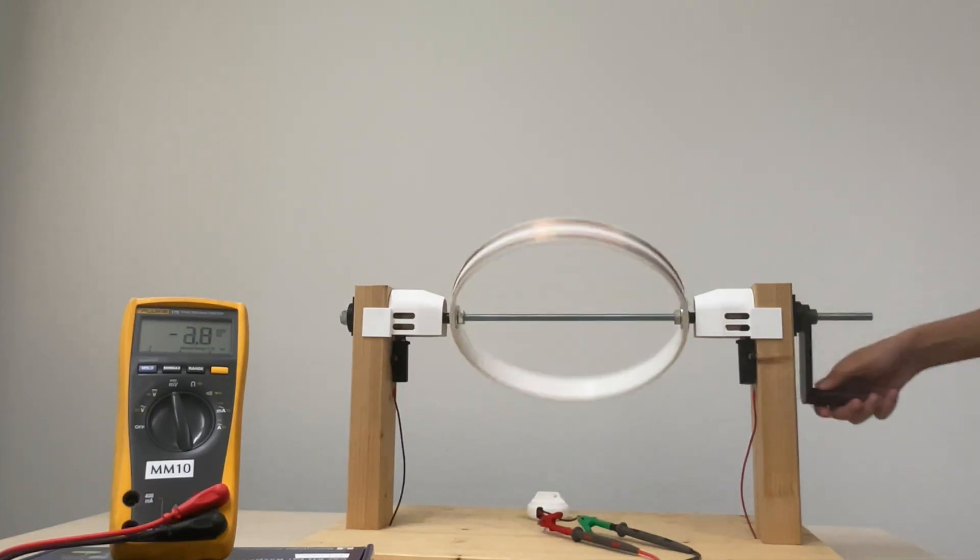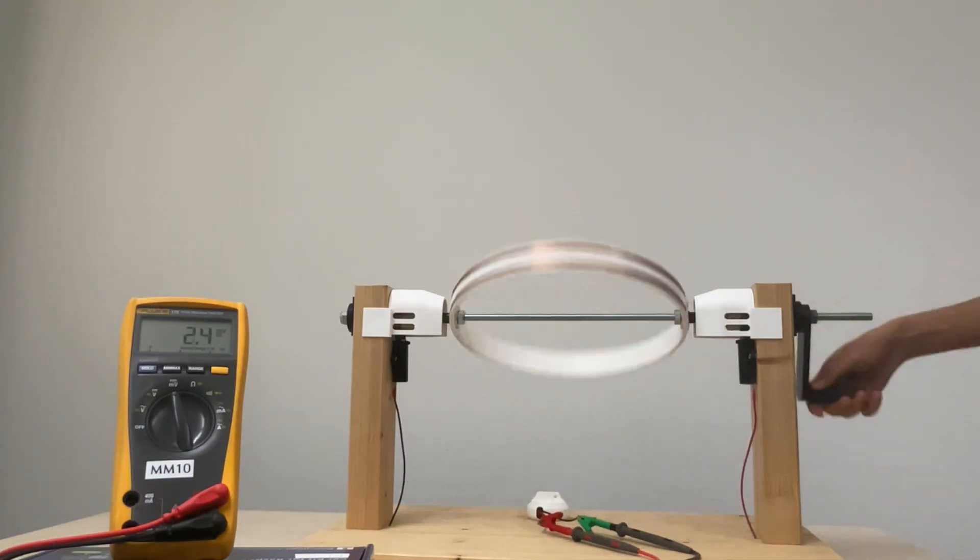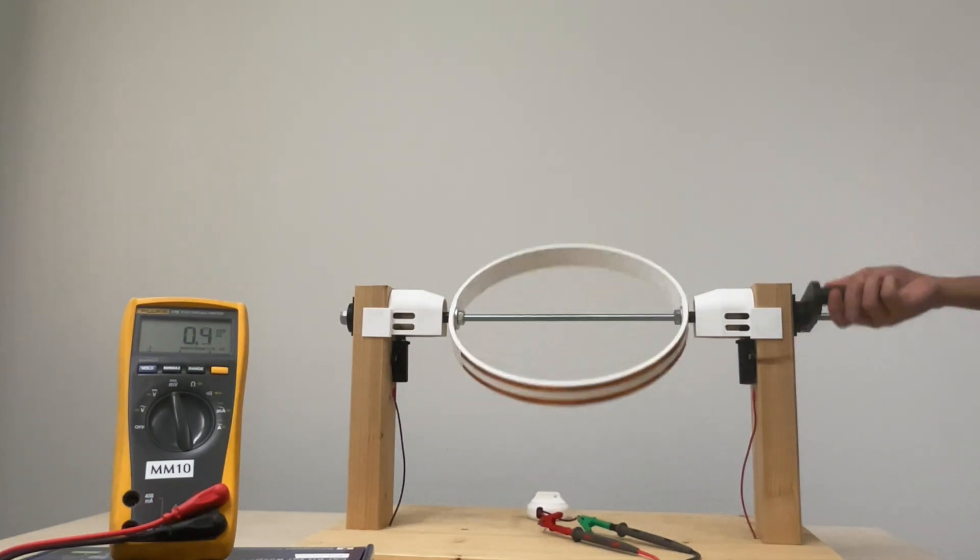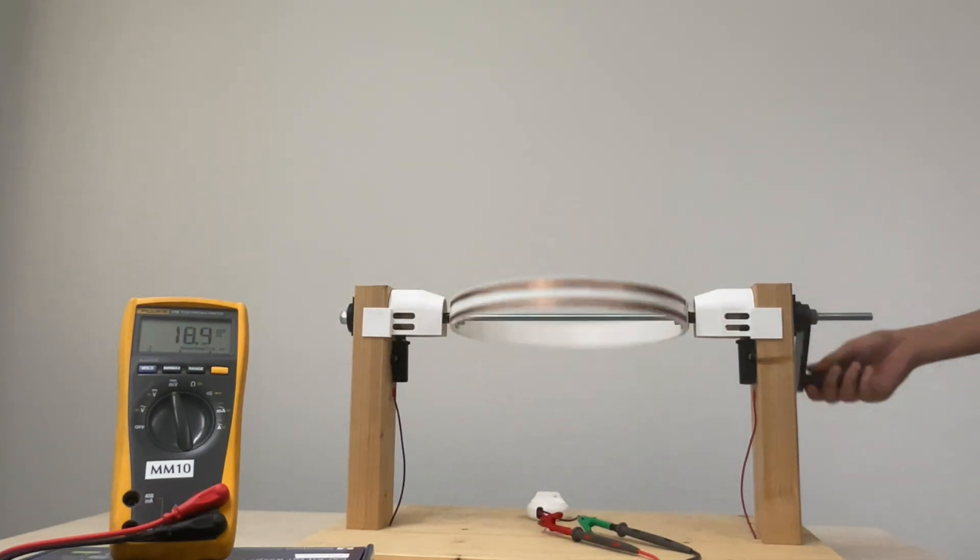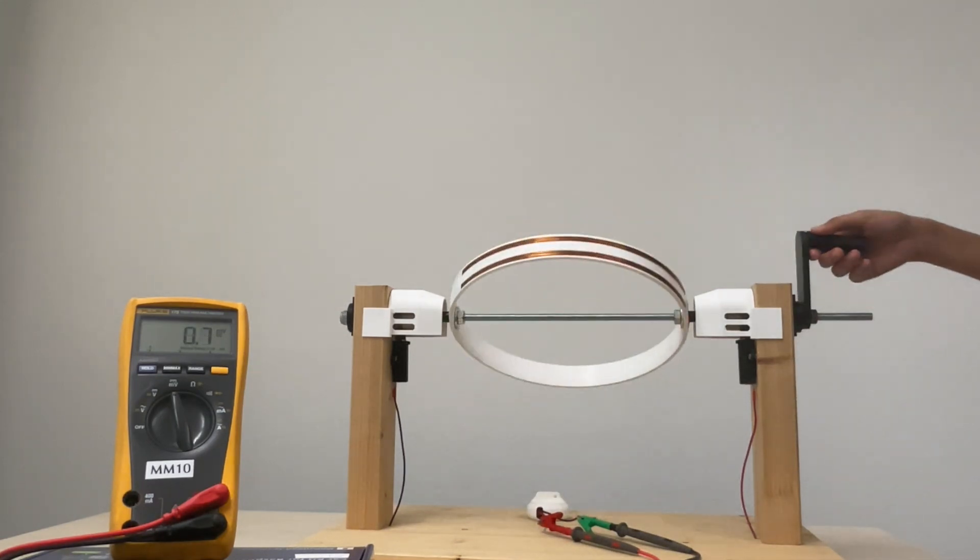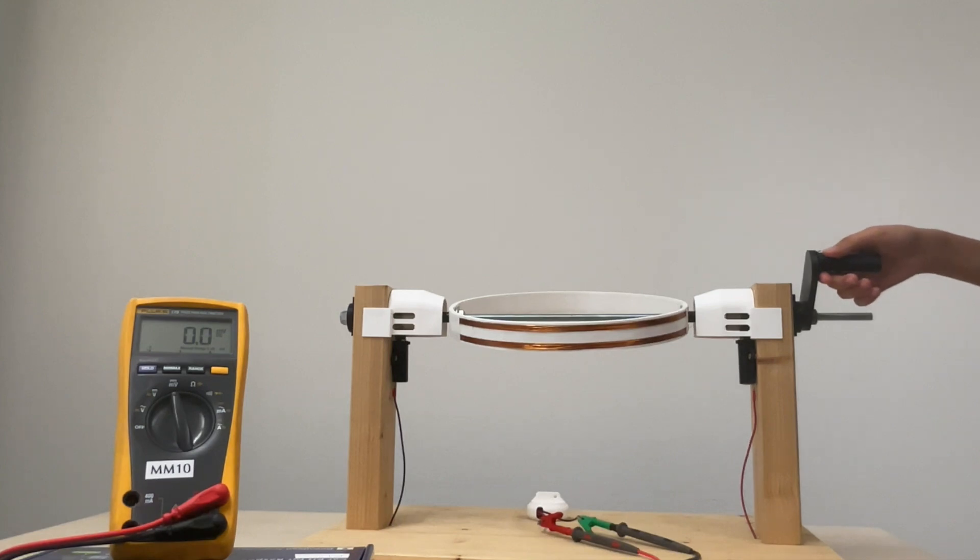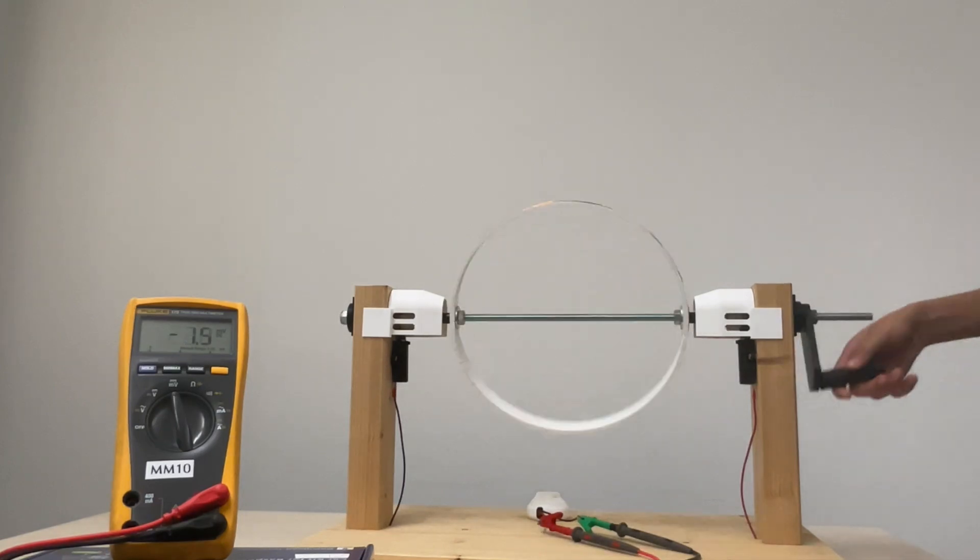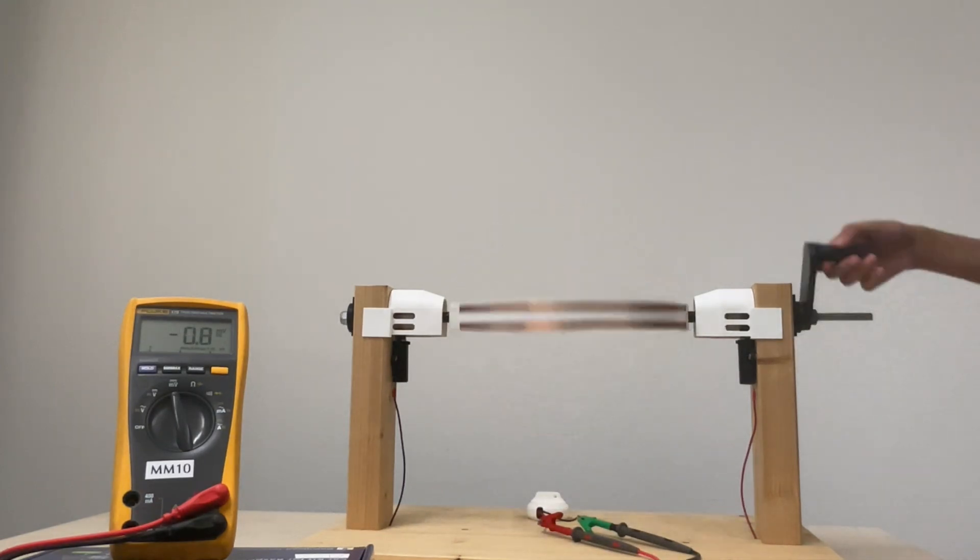The faster the coil spins, the quicker the flux changes, and that's why the voltage reading is rising. Since EMF is directly related to the flow of current, this means that a current is being produced in the loop as the coil spins faster. So essentially, by increasing the speed, we are generating more current in the system.